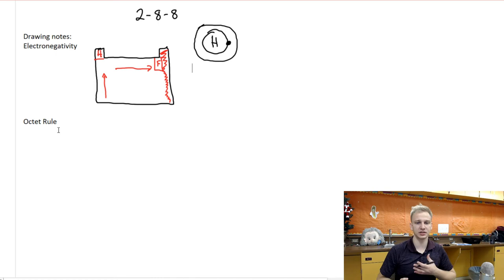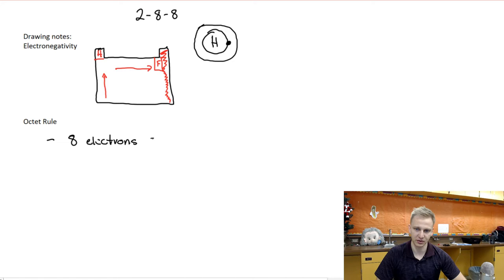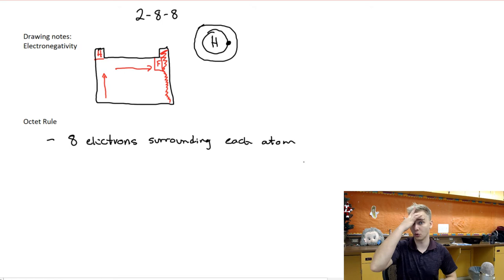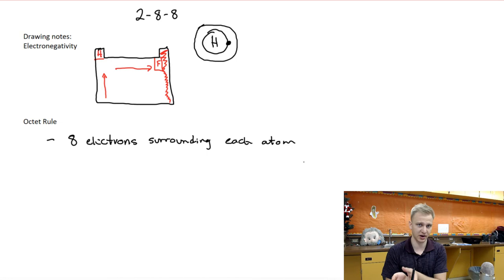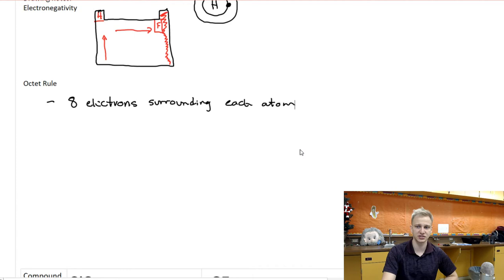Where that eight comes into play is with our octet rule. What these atoms always want is eight electrons surrounding them — that's the rule, eight electrons surrounding each atom. What that allows them to do is behave as though they're a noble gas. All noble gases have eight valence electrons, and if any other atom on the periodic table also has a full valence shell, it will be very stable and not want to react. That's ultimately our goal with these structures.